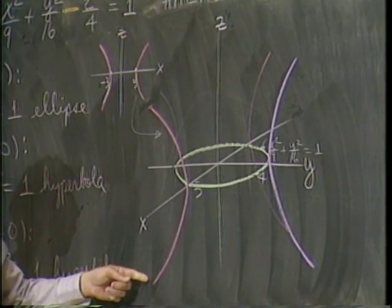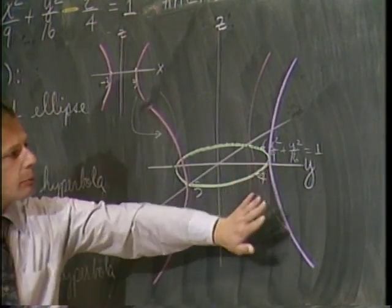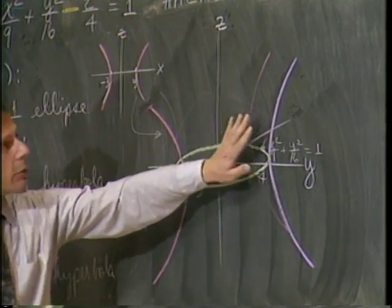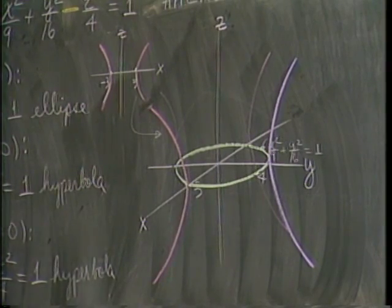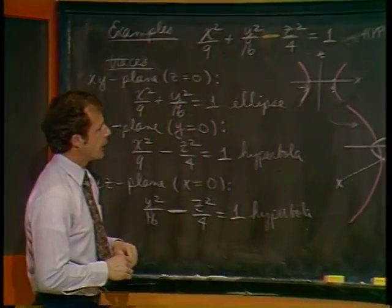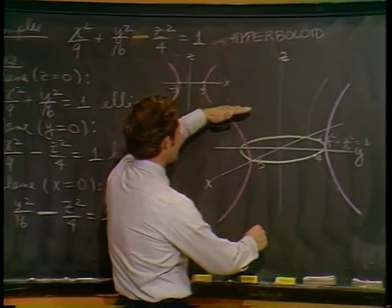So at least we have the minimums. We have the xy-plane intercept trace as an ellipse. Here we have one branch of a hyperbola in this xz-plane, and another branch over here, another hyperbola in the yz-plane. And the other branch is back in the background somewhere.